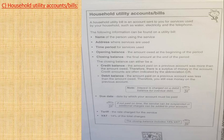If it's a credit balance, the amount paid in a previous account was more than the amount owed. For example, a lot of people do this with their credit cards - they pay more money into the credit card than is actually owed, so the first transaction they use the card for is actually their own money and not the bank's money. If it's a debit balance, the amount paid on a previous account was less than the amount owed - therefore you still owe money. Note: interest is charged on a debit balance, which is an overdue debt. The due date is the date by which the account must be paid. The tariff is the rate charged for the service.